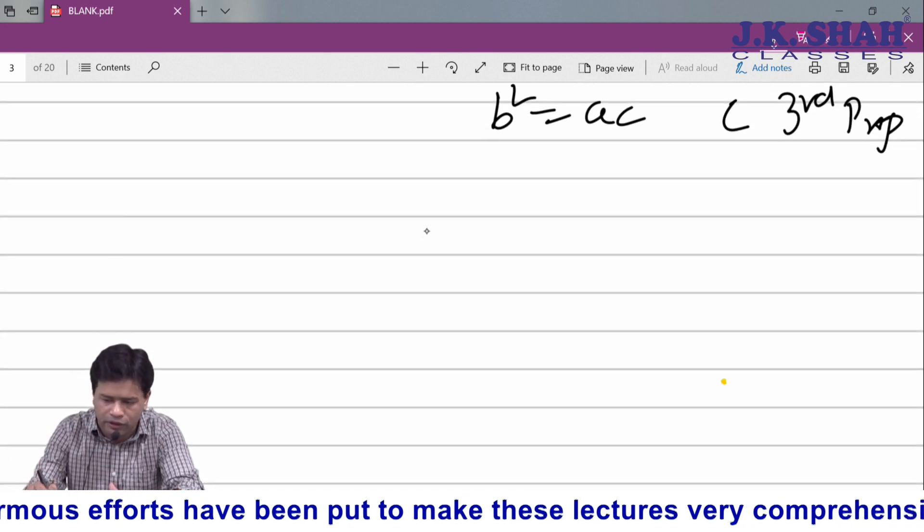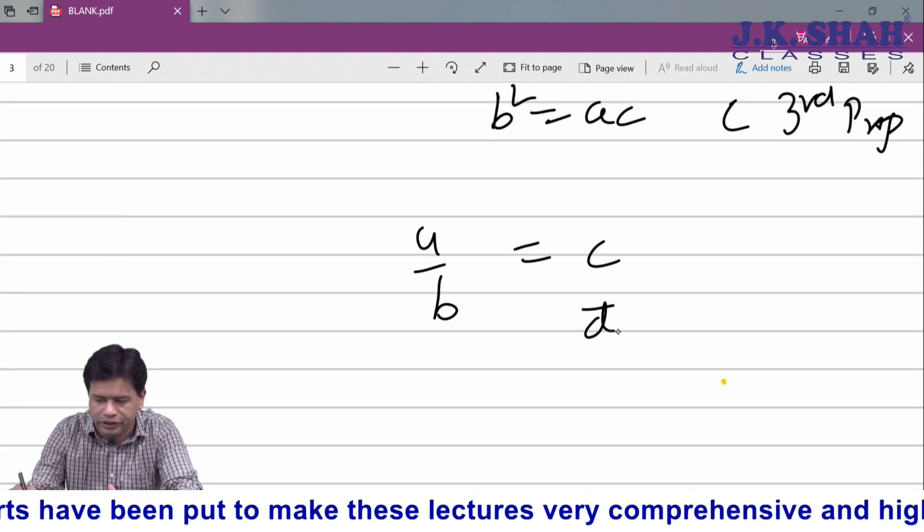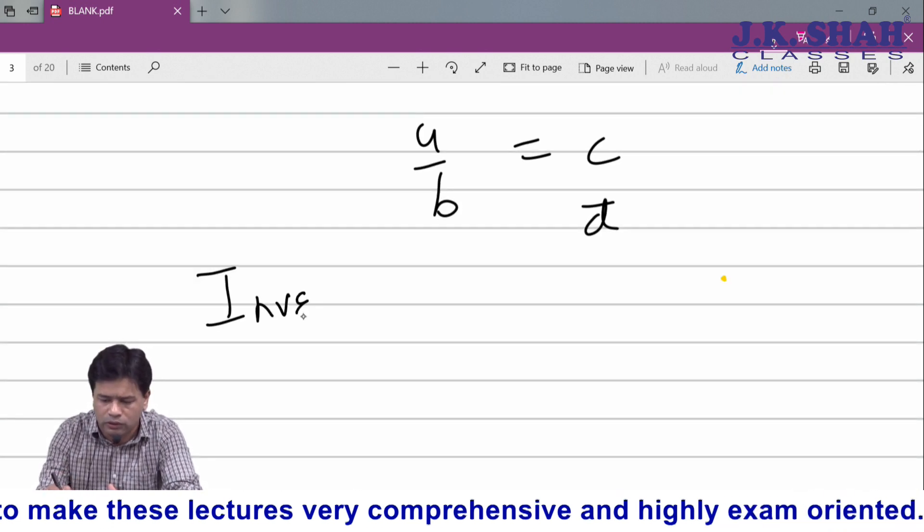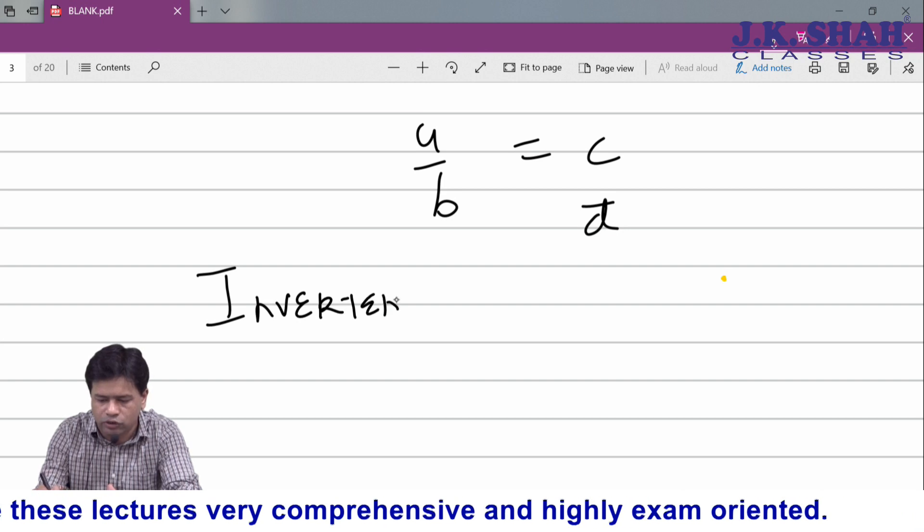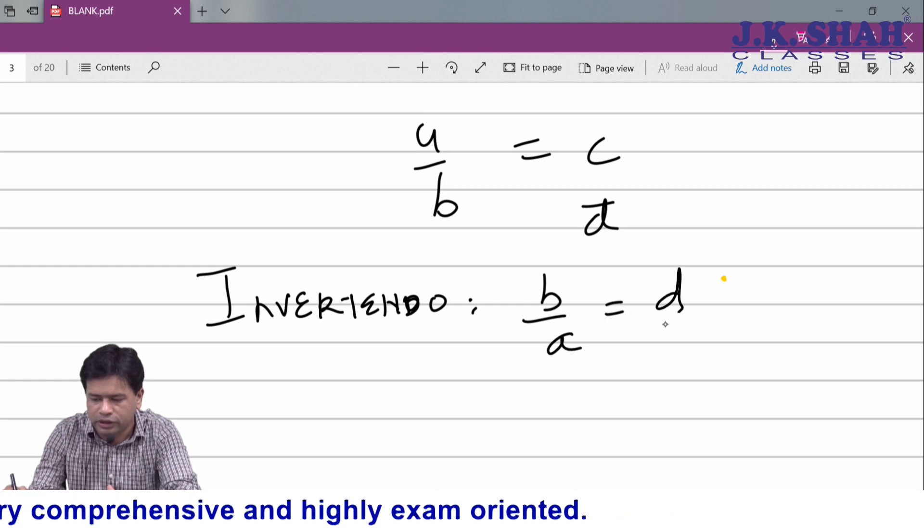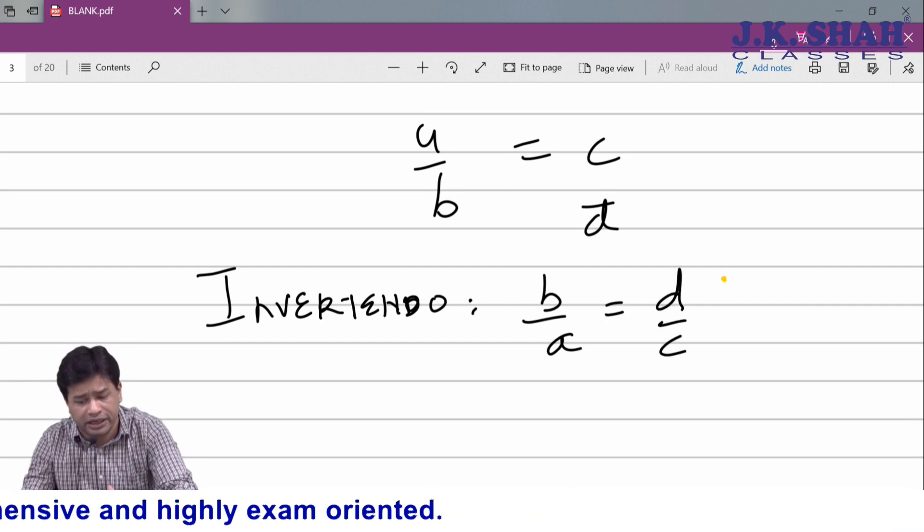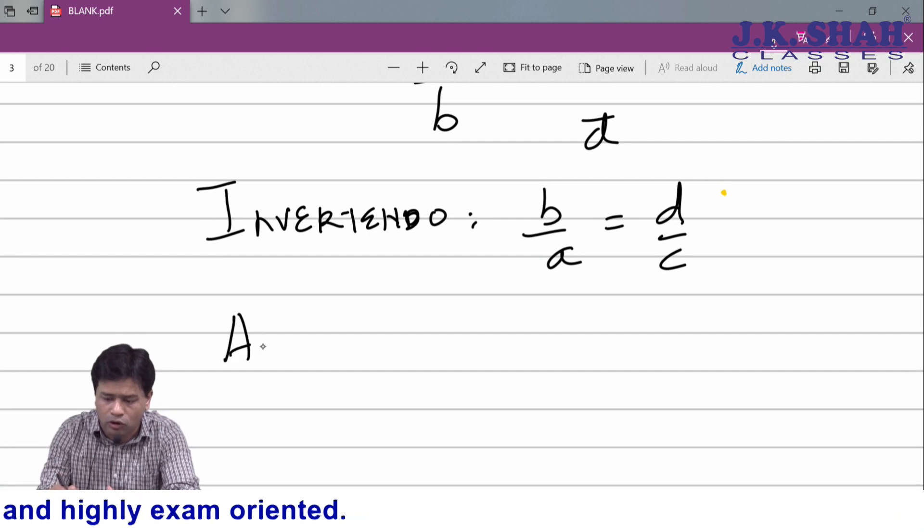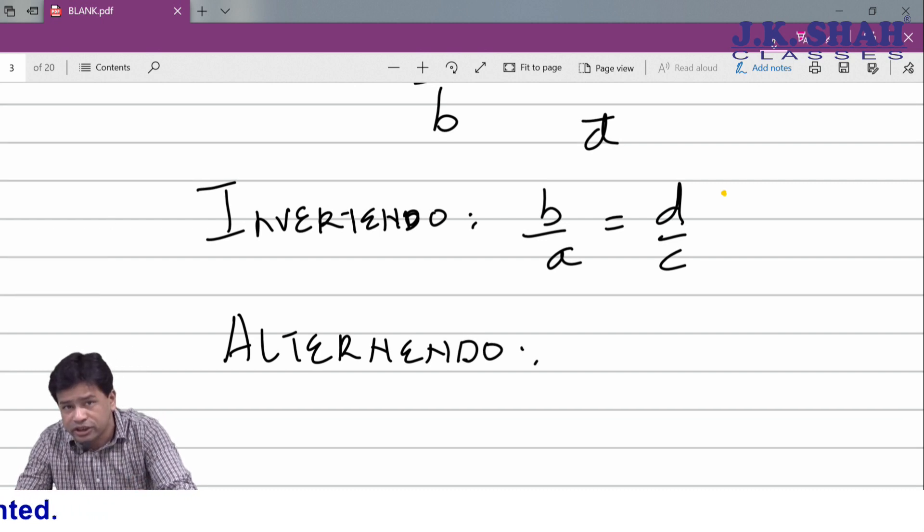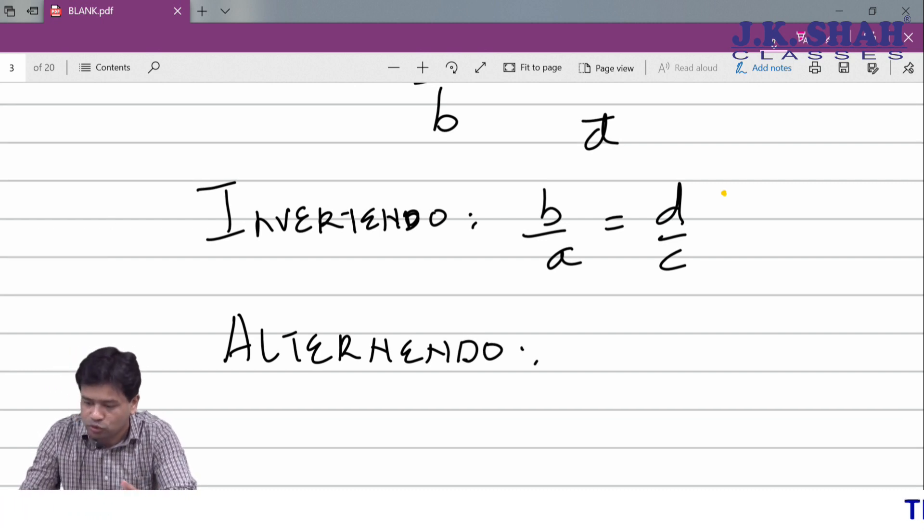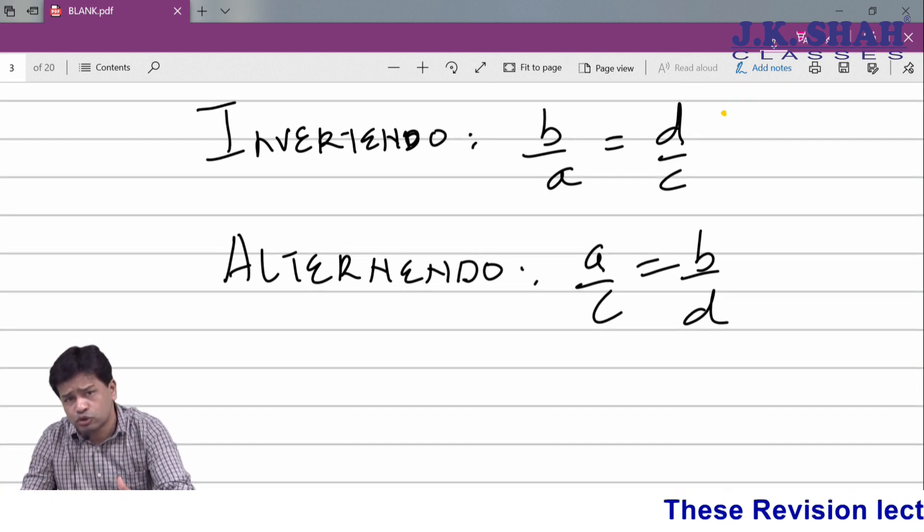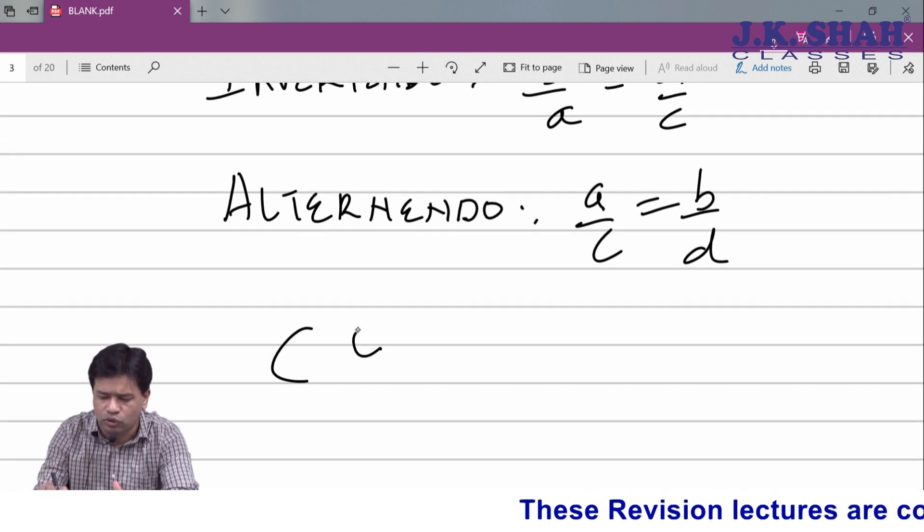If a upon b equals c upon d, some definitions: invertendo means b upon a equals d upon c - interchange the numerator and denominator. Alternendo: when I say alternendo, I interchange this denominator with that numerator, so a upon c equals b upon d. Students, you have already studied componendo and dividendo since school days.